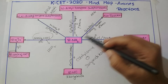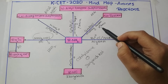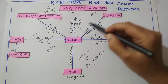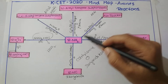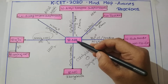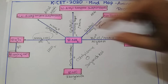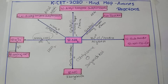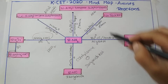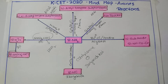When tertiary amine is treated with the same Hinsberg reagent, there is no reaction at all, because there is no hydrogen atom on the nitrogen in case of a tertiary amine. This is how you can distinguish between primary, secondary, and tertiary amines. Remember the reagents mentioned in each reaction.